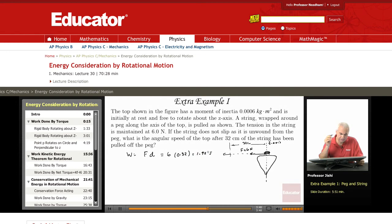So this is the work done, and this work must appear as kinetic energy of rotation. The top rotates with angular velocity omega and has a moment of inertia I, so the kinetic energy of rotation is just ½Iω².